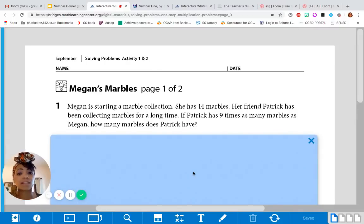Alright, I'm also going to read it out loud once because anytime I'm solving problems, I like to read the problem twice. Megan is starting a marble collection. She has 14 marbles. Her friend Patrick has been collecting marbles for a long time. If Patrick has nine times as many marbles as Megan, how many marbles does Patrick have?